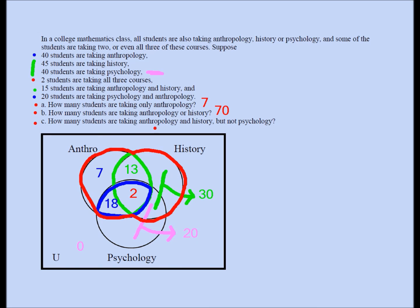Part C: how many students are taking anthropology and history but not psychology? Note the words 'and' and 'but not psychology.' The person must be taking anthropology and history but not psychology — so we cannot include the 2 students in the center who are also taking psychology. The answer is 13. If the question had asked how many are taking anthropology and history, the answer would be 15, but since it says but not psychology, you subtract 2. The answer is 13. We have all three answers, even though we don't know what each individual unknown region represents.